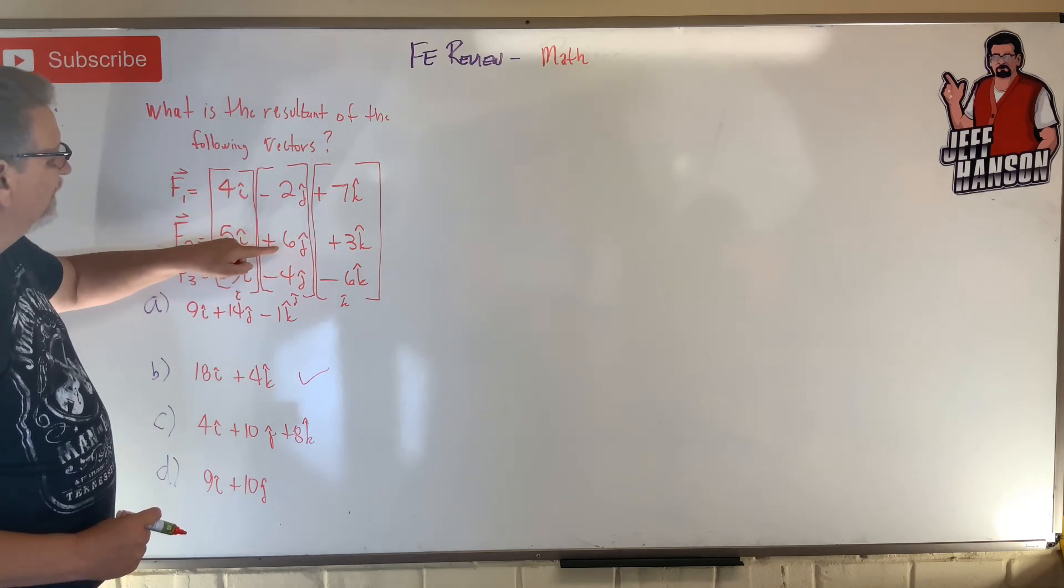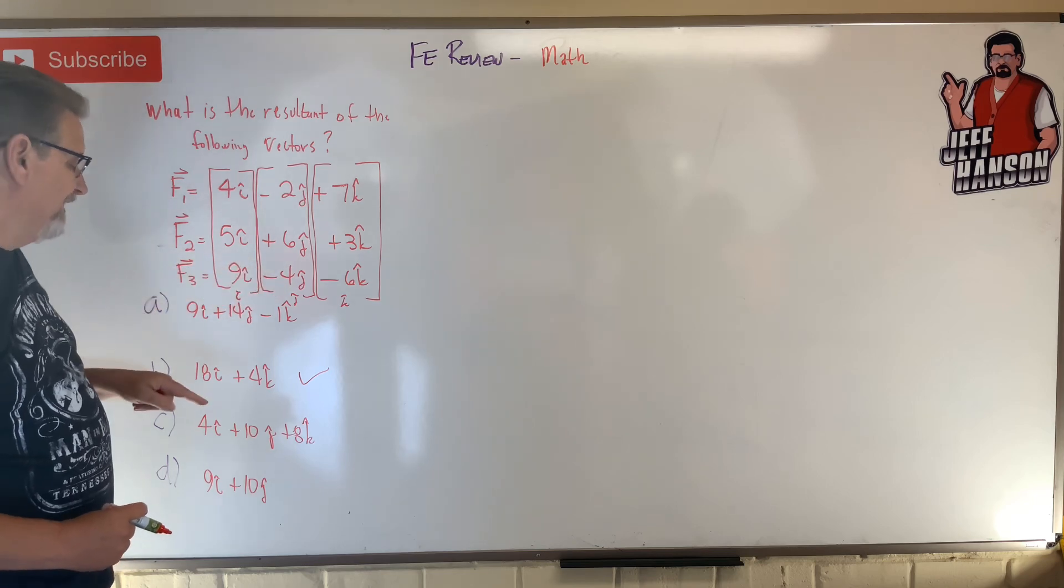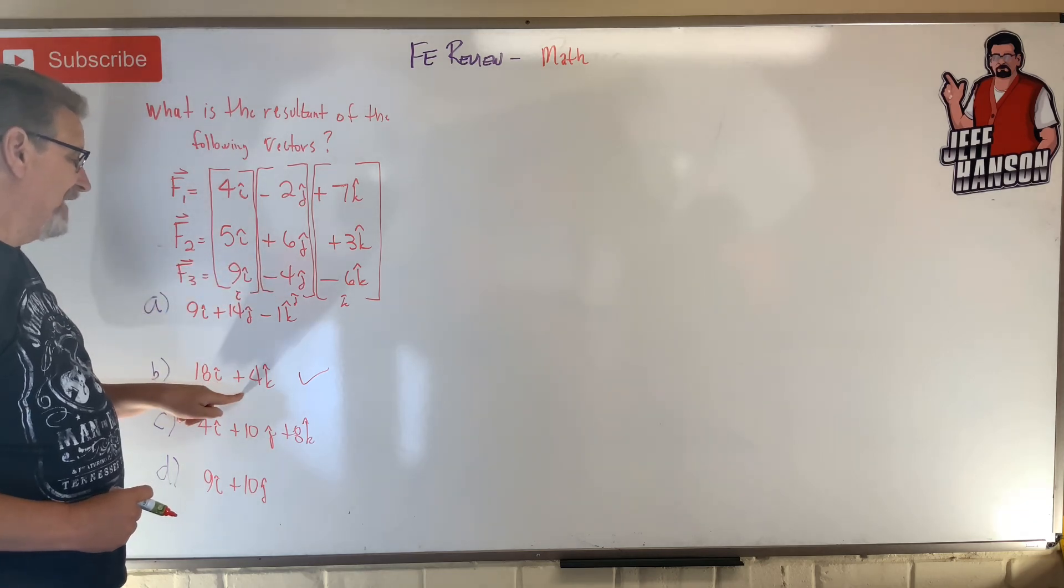Plus 6 is 4, and then 4 off of that, oh that leaves 0, so no j-hat. Yep, looking good.